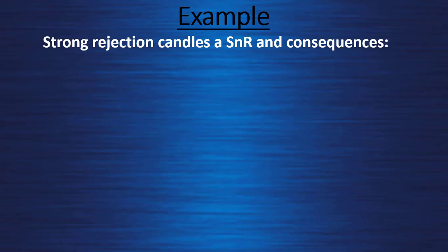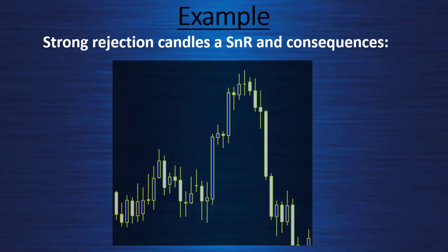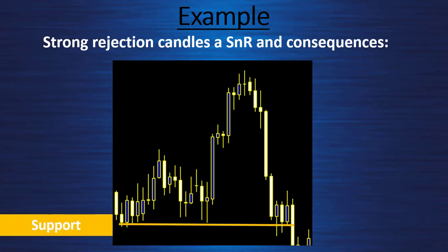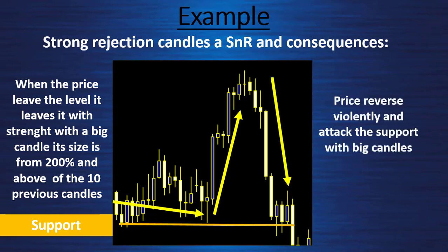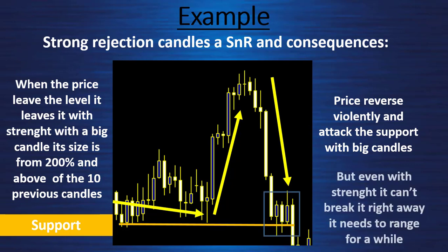Strong rejection candles at support and resistance and their consequences. On this chart we have a support line, and when the price leaves the level it leaves with strength — with a big candle whose size is 20% and above of the 10 previous candles. Then the price reverses violently and attacks the support with big candles, but even with strength it can't break it right away and needs to consolidate for a while.